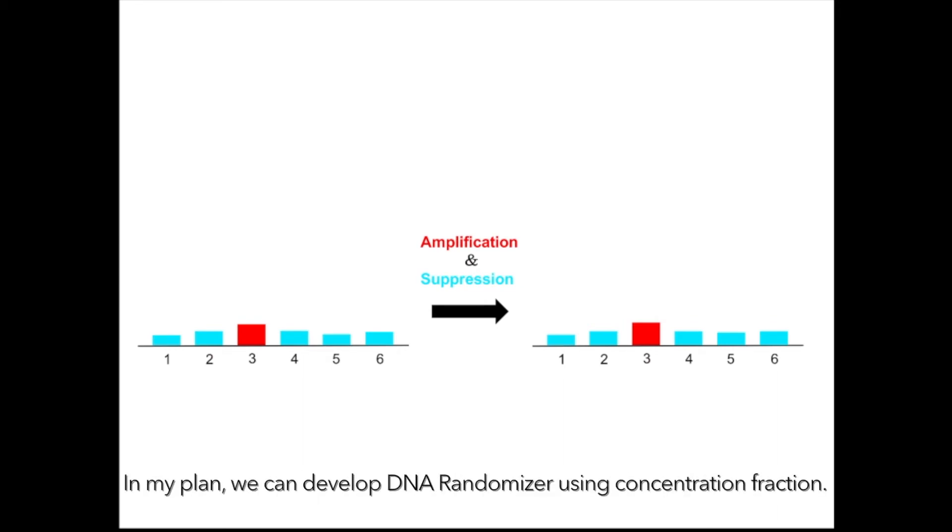How do you make randomizer with DNA? In my plan, we can develop DNA randomizer using concentration fractions. In this example, three is amplified and the others are suppressed.